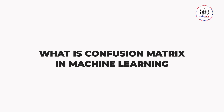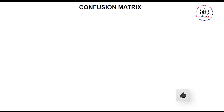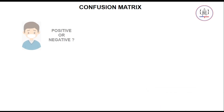Hello everyone and welcome. In this video we will see what is confusion matrix in machine learning. Before moving forward, it is better to learn it through an example. Let's consider an example where we want to build a model which predicts the medical condition of a patient — specifically whether the patient is going to test positive or negative. To evaluate whether our model is doing fine or not, we use the confusion matrix.